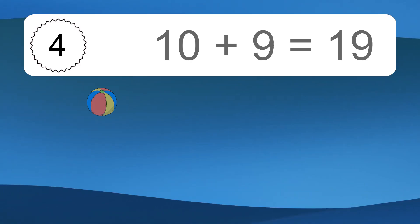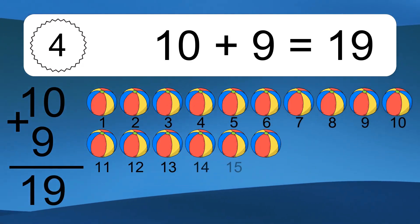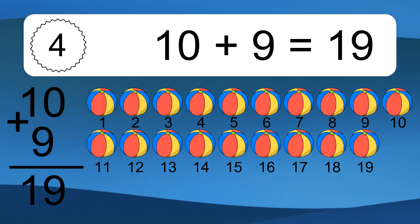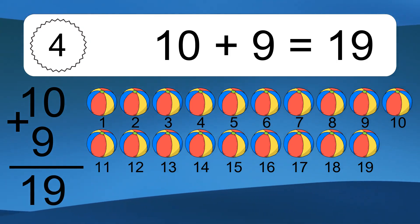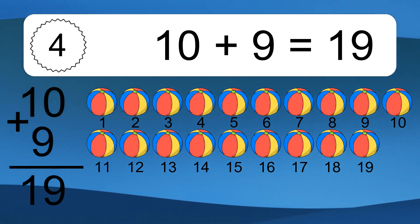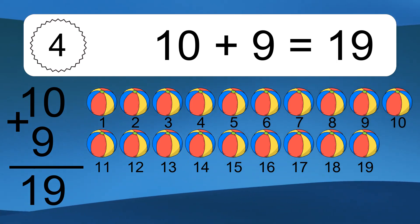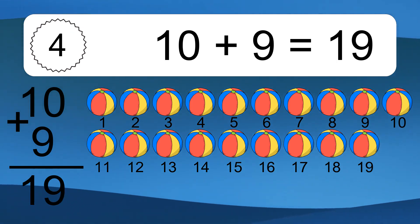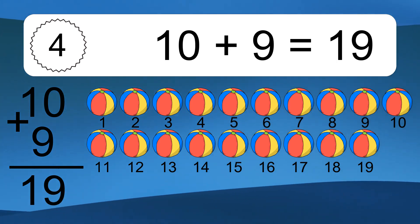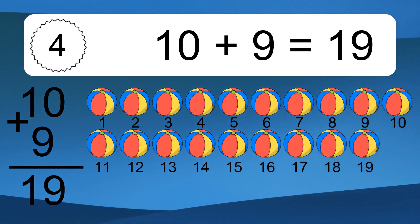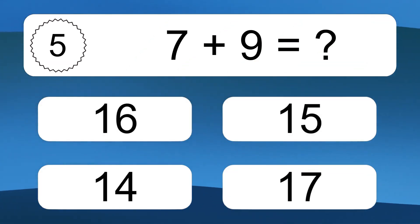10 plus 9 equals 19. Let's count it. 1, 2, 3, 4, 5, 6, 7, 8, 9, 10, 11, 12, 13, 14, 15, 16, 17, 18, 19. 7 plus 9 equals what?